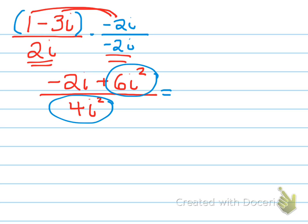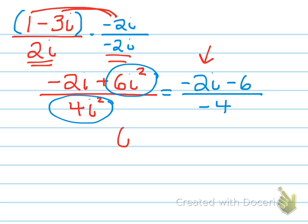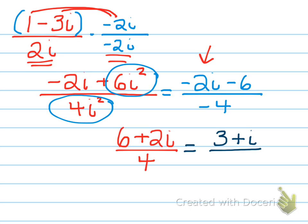Now we evaluate those i squared terms. We have negative 2i minus 6 all over negative 4. We need to write this in proper form — the imaginary part should come second. We have three negatives here, so dividing negative 2i by negative 4 and negative 6 by negative 4 gives us 6 plus 2i over 4. The very last thing is to simplify — everything is divisible by 2, so our final answer is 3 plus i divided by 2.